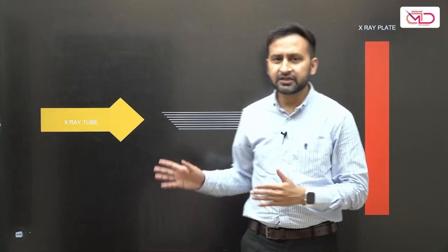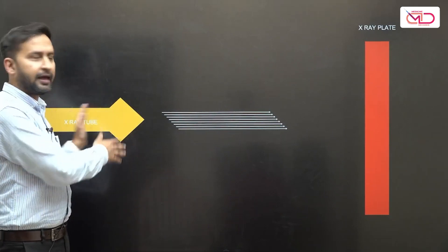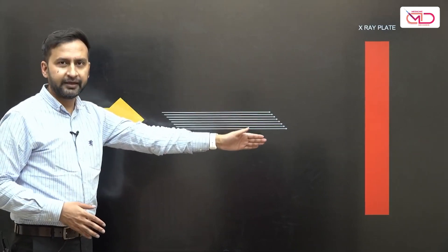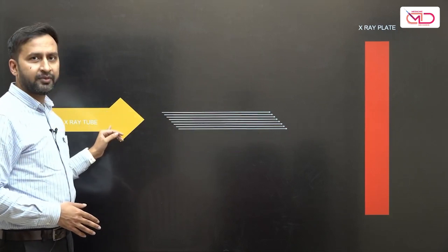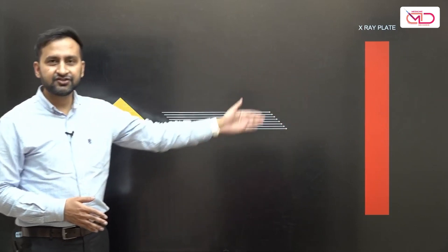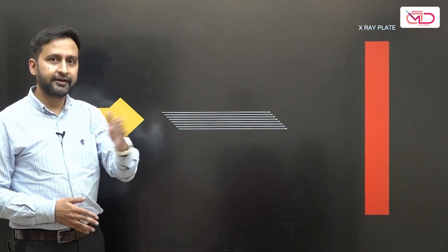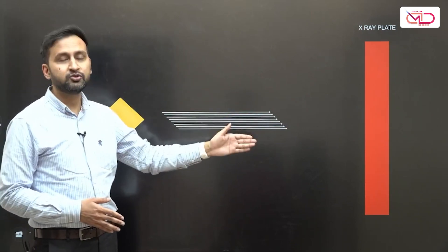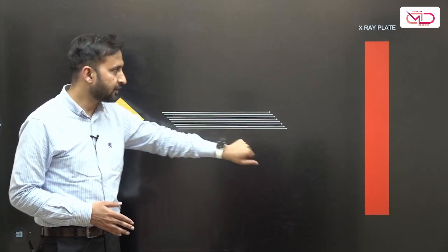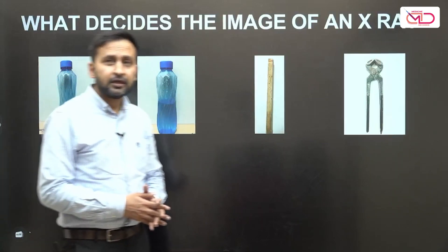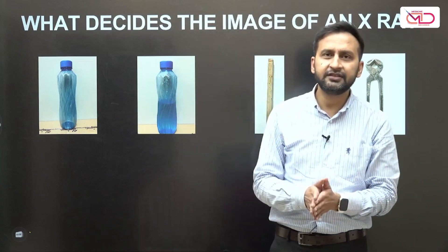This is a schematic diagram where I've simplified the entire process. The yellow colored thing is the X-ray tube and the red colored thing is the X-ray plate. X-rays are generated from the tube, run in parallel lines, and finally strike the X-ray plate on which the image is formed. The patient is placed somewhere between the X-ray tube and the X-ray plate — we'll discuss patient positioning and the reasons for it later.